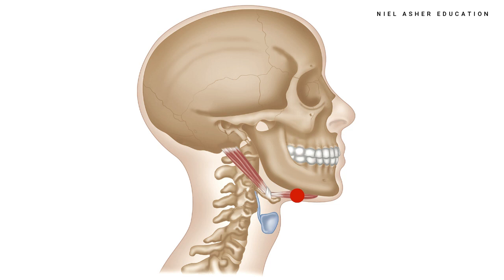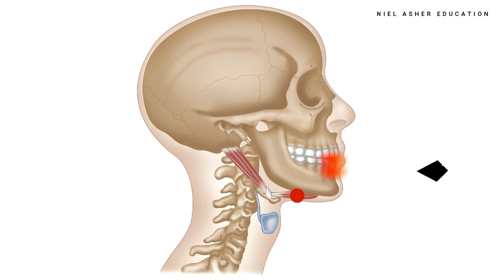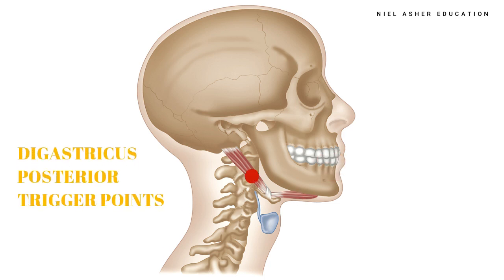The anterior belly refers pain to the lower fore incisor teeth and the alveolar ridge below the teeth. A person with trigger points in the posterior belly of the digastricus will most likely complain less of pain and more so of difficulty swallowing, along with the sensation of a lump in the throat that will not go down.